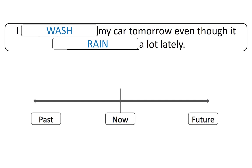The same rules apply to other cause and effect conjunctions, or in this case, 'even though,' which expresses the opposite of what we expect the result to be.